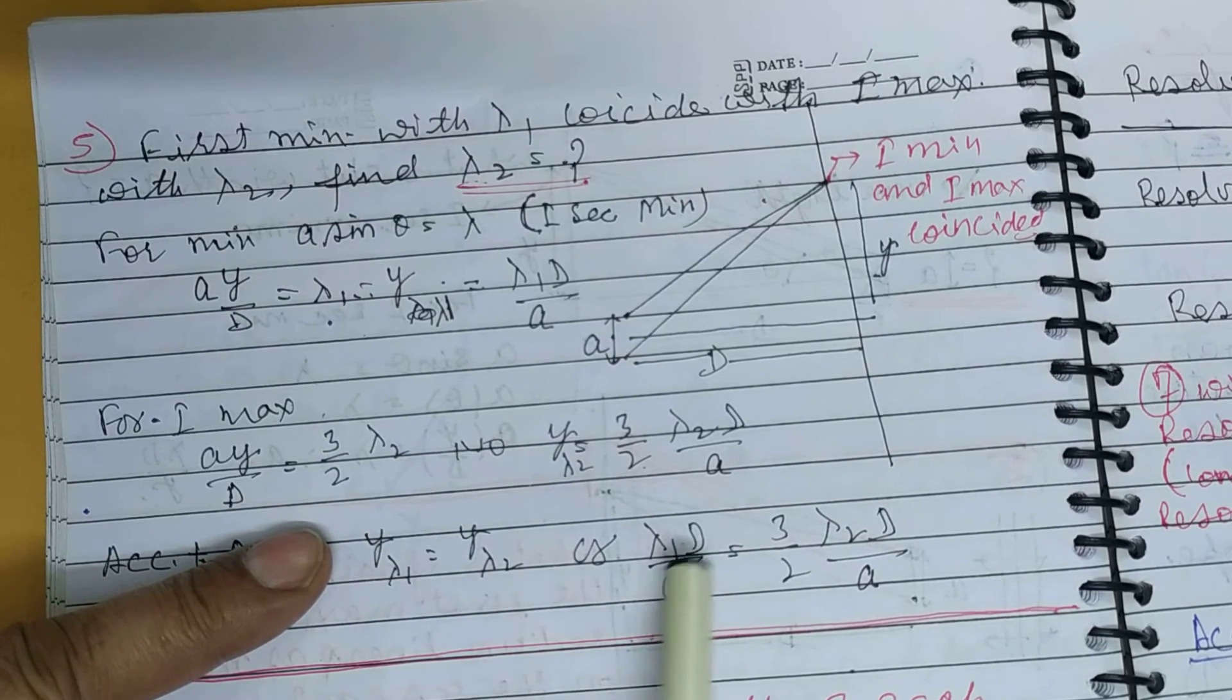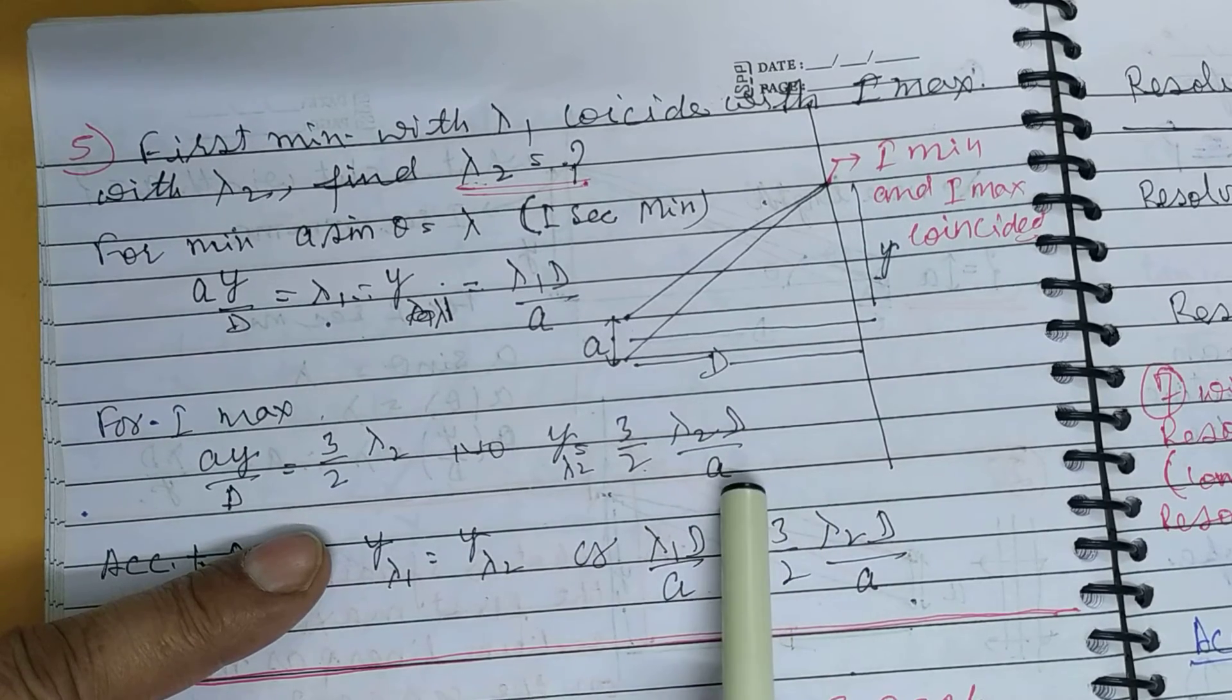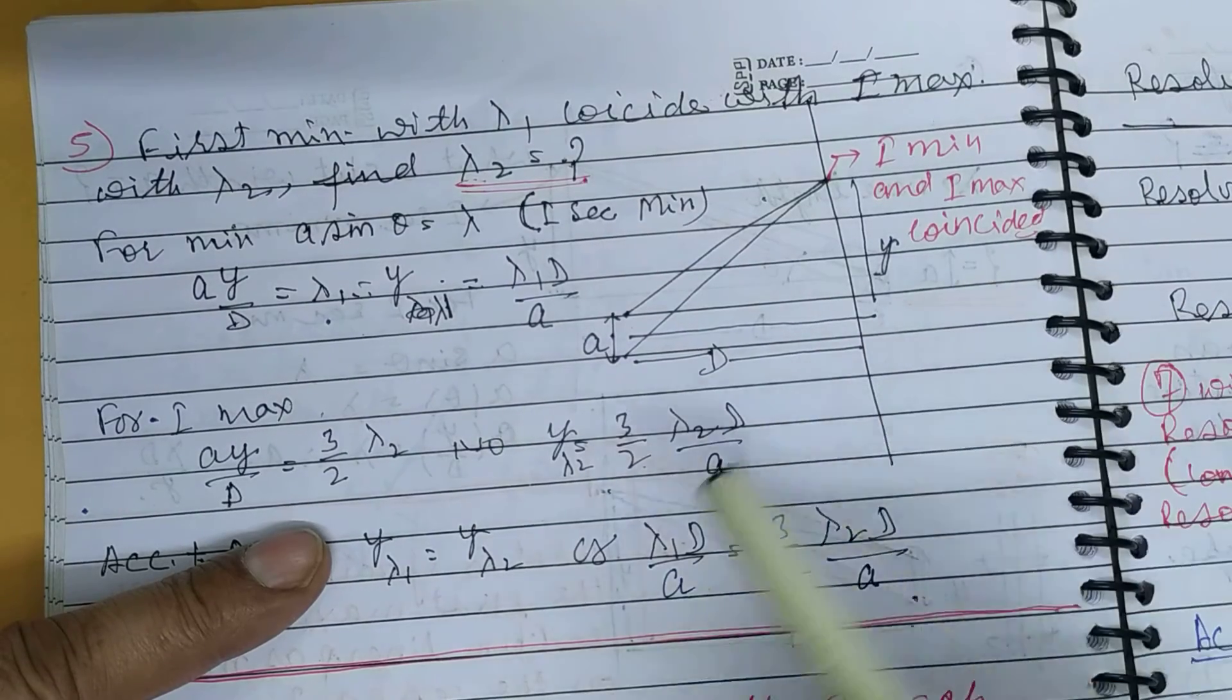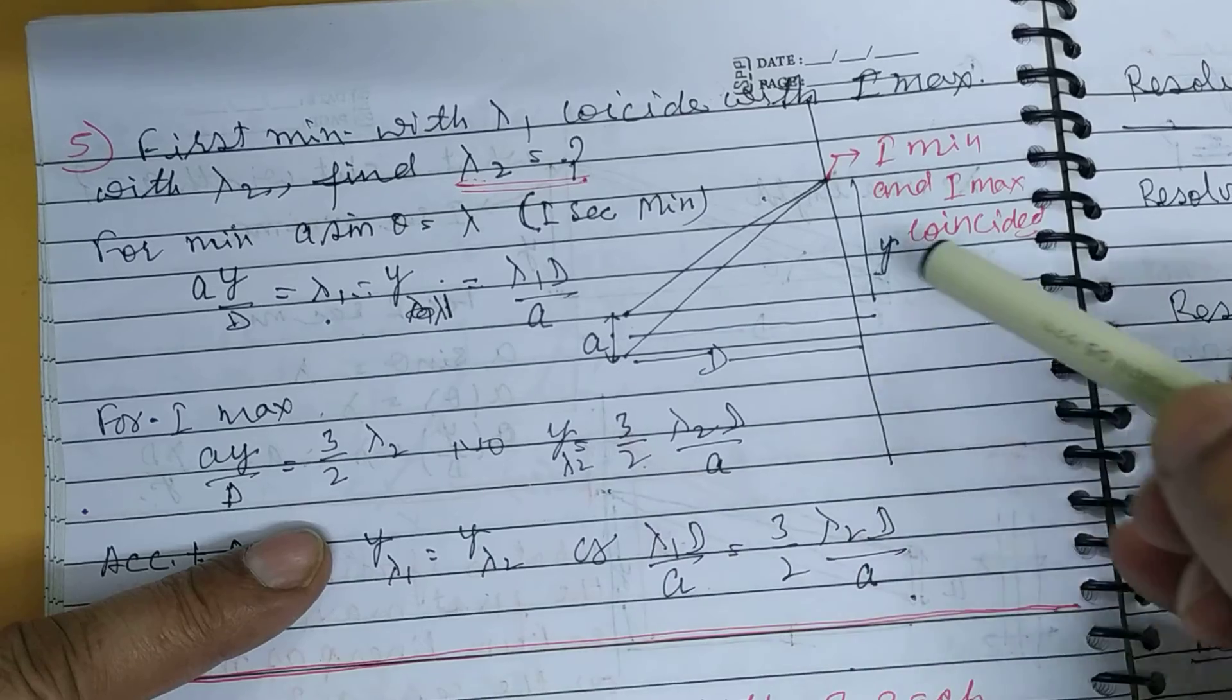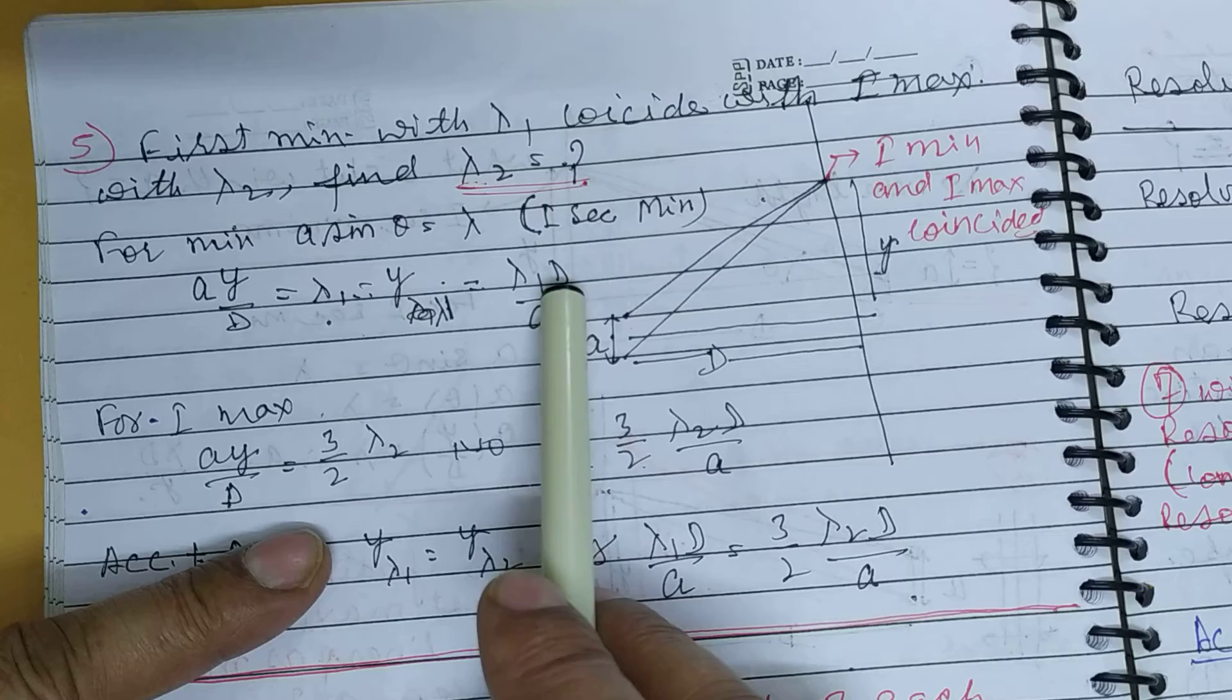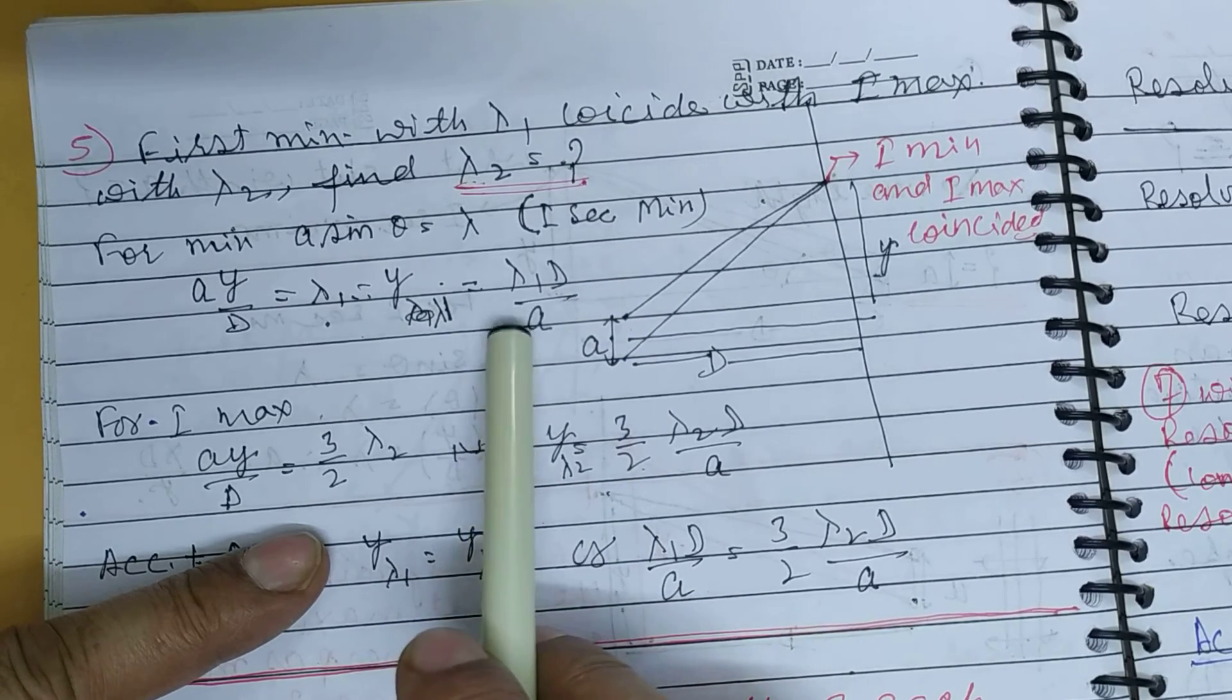So when we get y: 3 upon 2 lambda 2 d by a. This is y, the distance from central to first secondary. And when you get y with respect to the first secondary maximum: